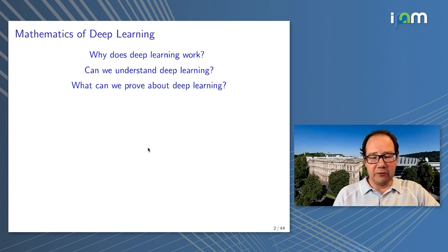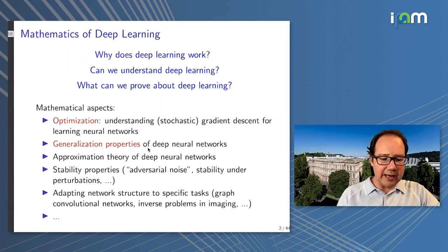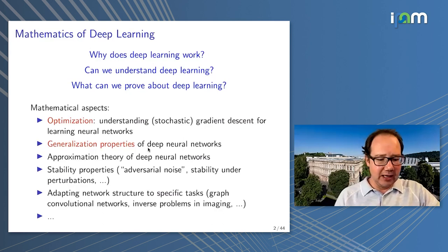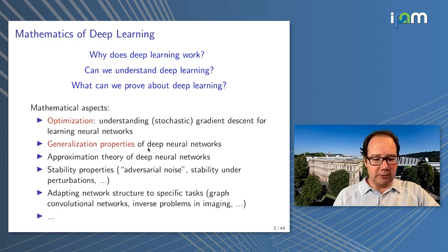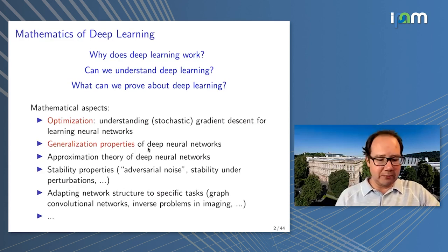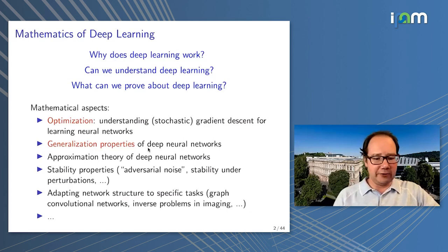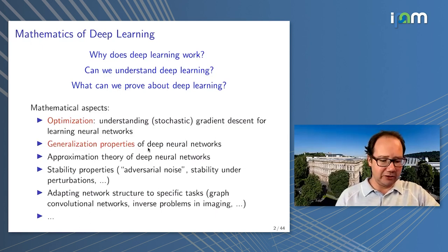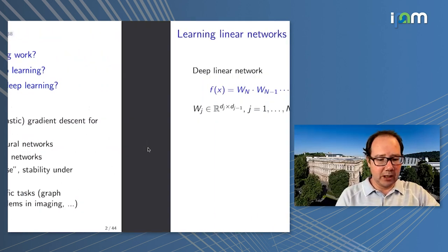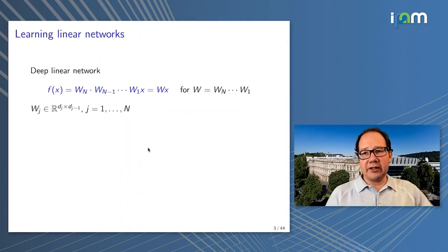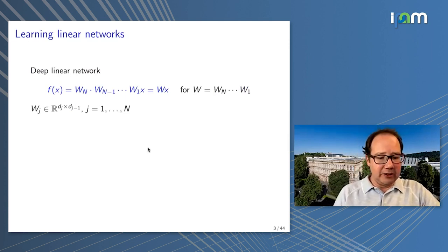The question is also what can we prove about deep learning. There are several mathematical aspects: in my talk I will touch on the optimization part — in particular, understanding gradient descent or stochastic gradient descent for learning neural networks — and also generalization properties of deep neural networks. There are many other aspects I will leave aside, like approximation theory and stability properties.